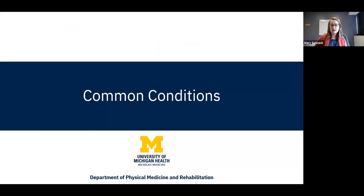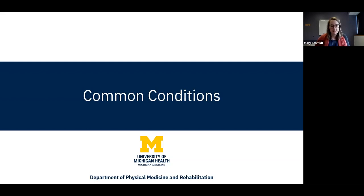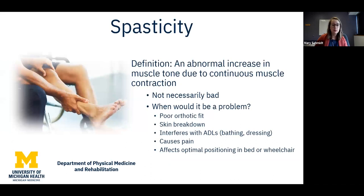Next, I'll do a broad overview of some common conditions that a lot of our patients come to see us for in the clinic. It is not all encompassing, but we want to give you a general idea of the types of things we treat at our adult CP clinic. The number one condition is spasticity — probably not surprising.